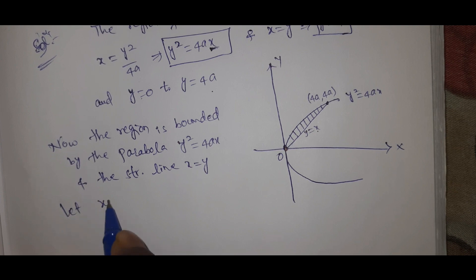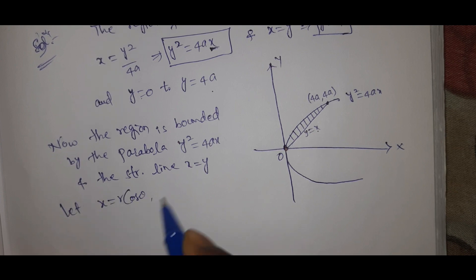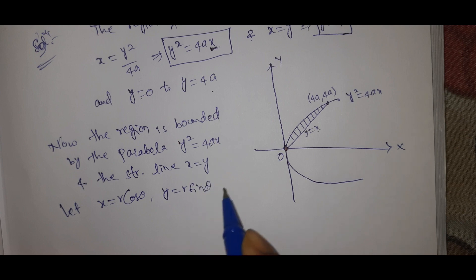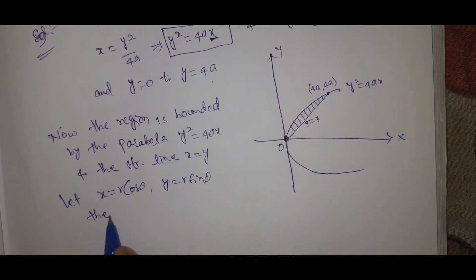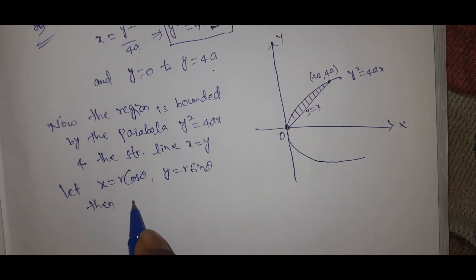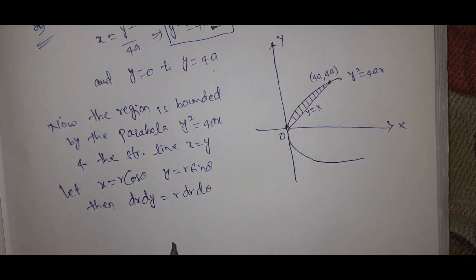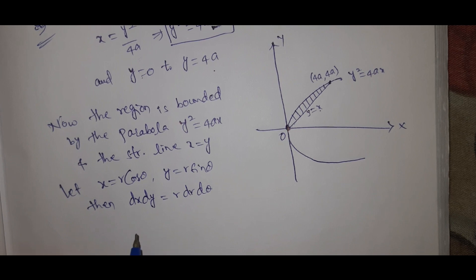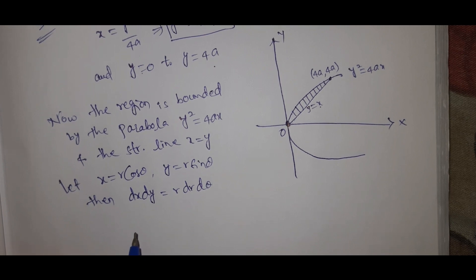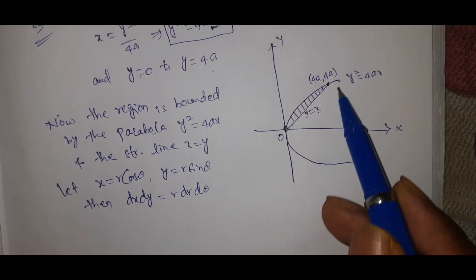Now let x = r cosθ, y = r sinθ. Then dx dy = r dr dθ. This is the polar coordinate substitution.